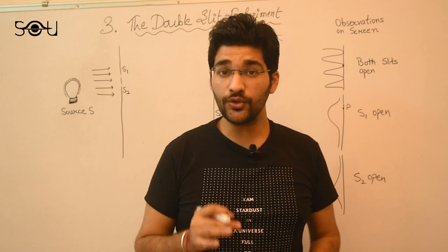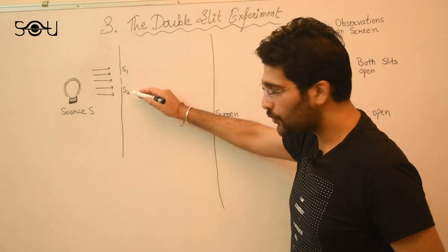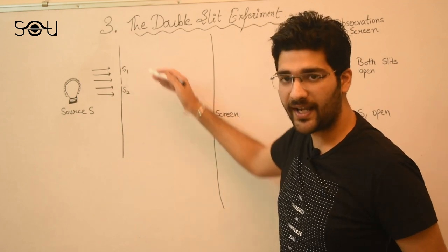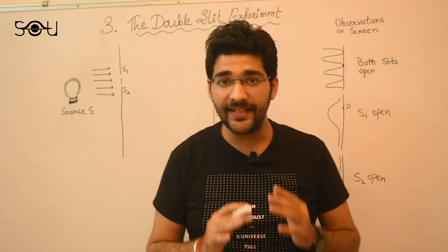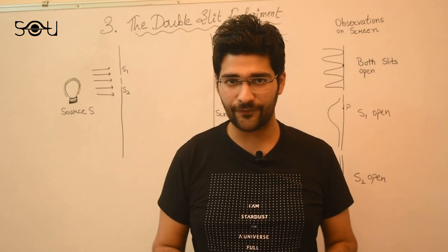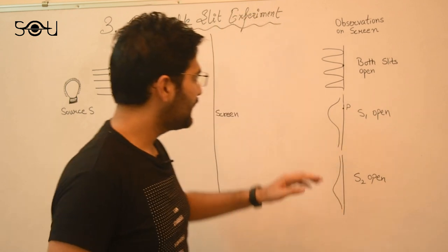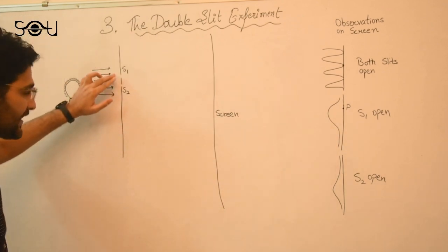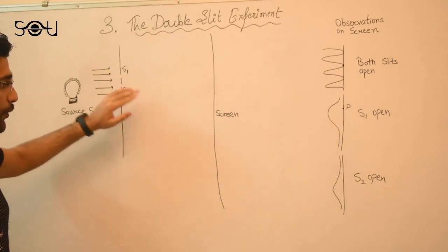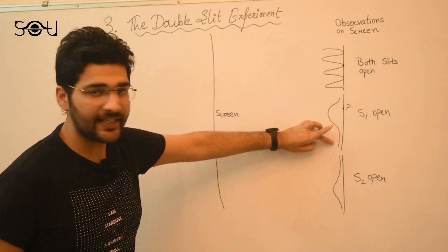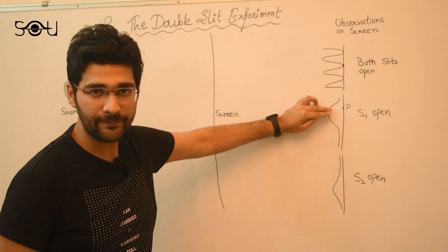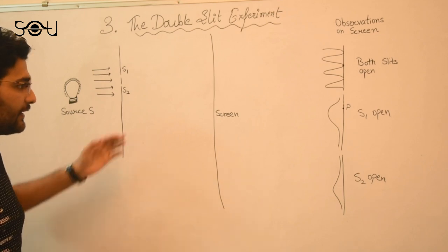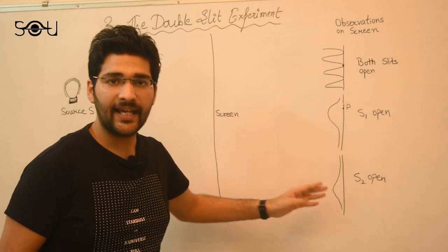But what happens when I close one of the slits? Suppose I close S2 and keep S1 open, so light is only passing through S1. This pattern mysteriously disappears. We no longer see alternate bright and dark fringes. All we see is a single maxima in front of the slit that is open. So in our case, we had S1 open, S2 was closed. Hence we just see a single maxima of intensity of light in front of the slit that is open.